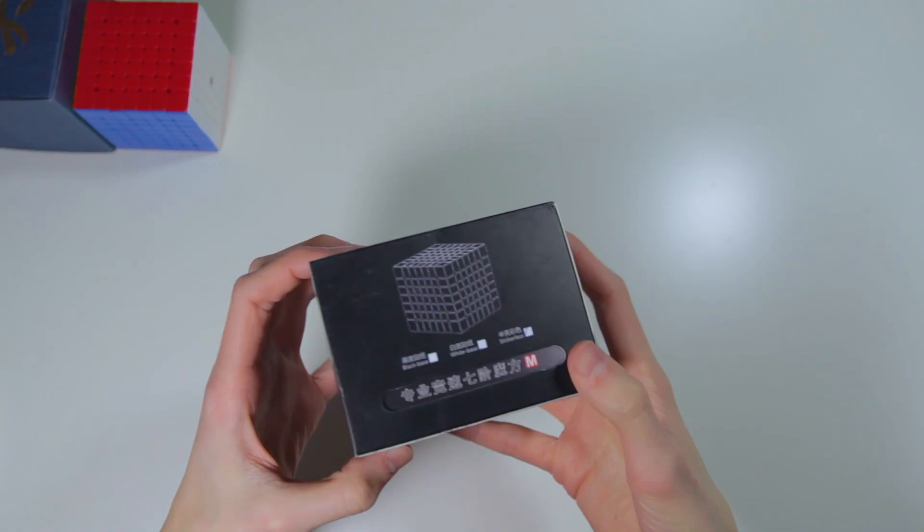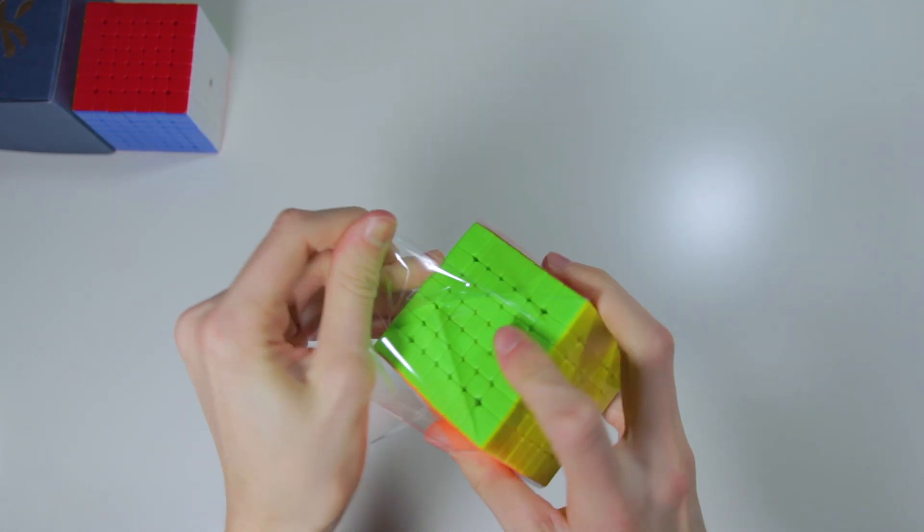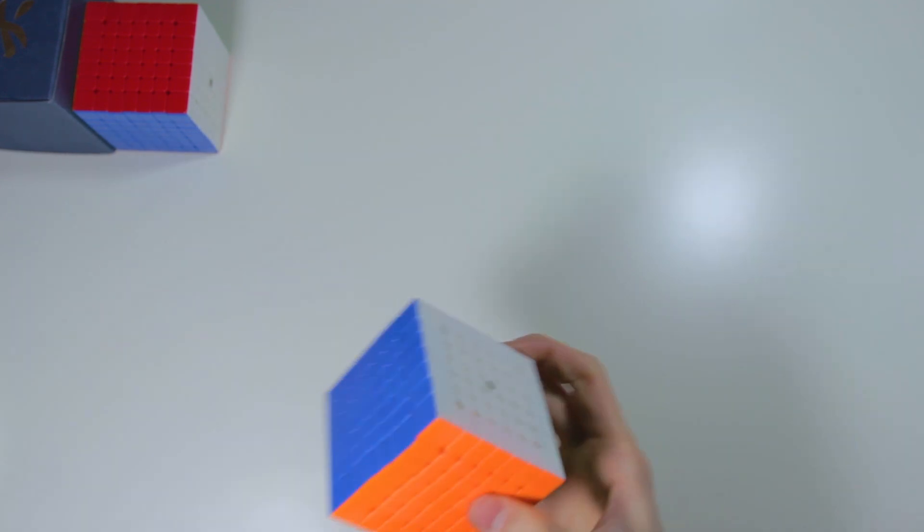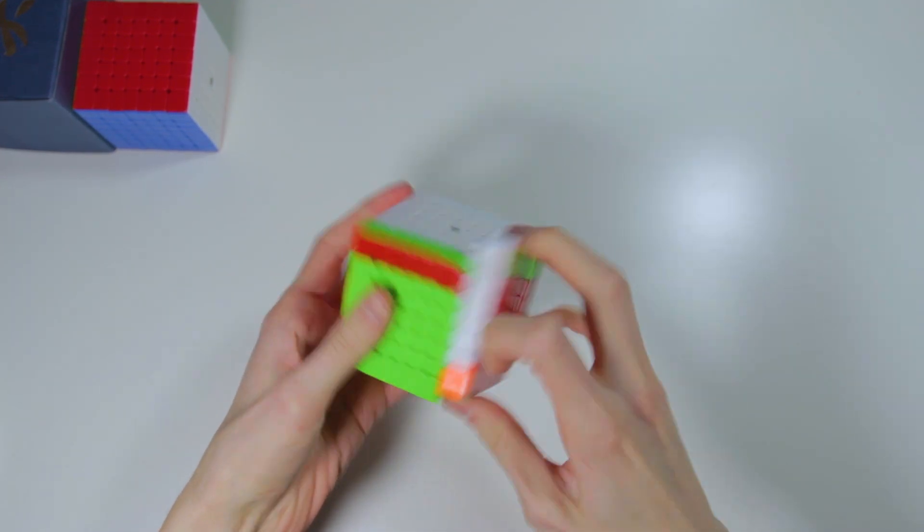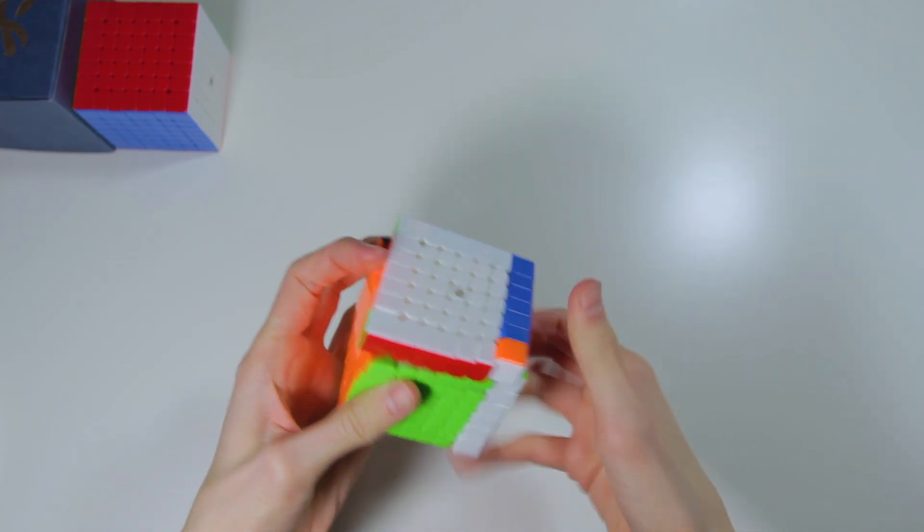The next cube in the box is another new 7x7, the X-Man Spark M. This cube feels a bit smaller than the Aofu GTS-M, which I personally like. Doing first turns, this cube impressed me right away. It's fast, decently fluid, and fairly smooth.